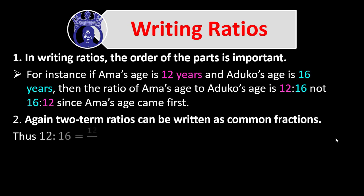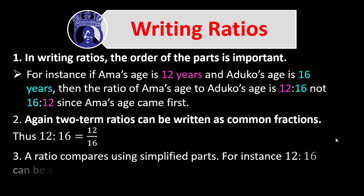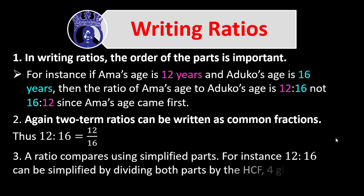Two-term ratios can be written as common or vulgar fractions — for example, 12 to 16 can be written as 12 over 16. A ratio compares using simplified parts, so it is good to reduce the ratio into its simplest form. This is normally done by dividing both parts by the HCF. For 12 to 16, dividing both parts by the highest common factor gives you the simplified ratio 3 to 4.